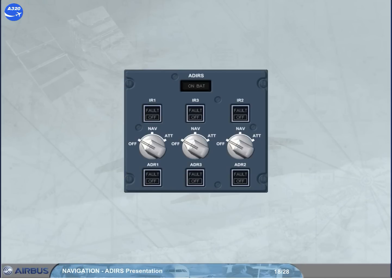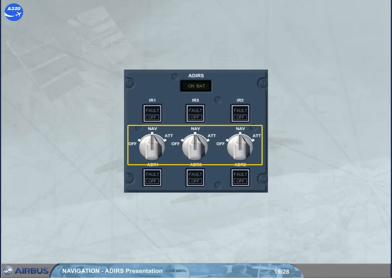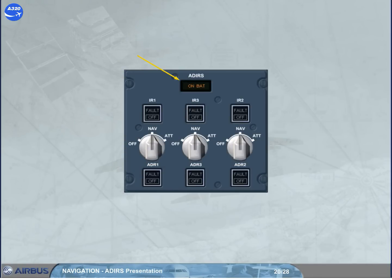Each ADRU has an associated rotary mode selector. In the off position, the ADRU is not energized, so ADR and IR data are not available. The three ADR and the three IR switches normally remain on, but they can be selected off in response to ECAM procedures. In the nav position, the ADRU is energized. The nav position is the normal mode of operation, and full inertial data is provided to the aircraft systems. The on-bat light comes on to inform the crew that the ADRU system is being powered by aircraft batteries only. The light also comes on for a few seconds at the beginning of a full alignment as a test of the battery circuit.